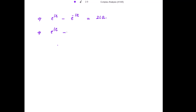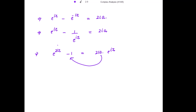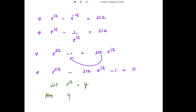This implies e to the power iota z minus 1 divided by e to the power iota z equals 2 iota a. So e to the power 2 iota z minus 1 equals 2 iota a times e to the power iota z. Taking everything to one side: e to the power 2 iota z minus 2 iota a times e to the power iota z minus 1 equals 0. Let e to the power iota z equal y, marking this as equation 1.